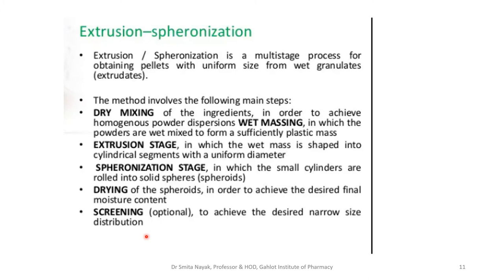Extrusion spheronization is a multi-step process of wet mass extrusion followed by spheronization to produce the pellets. There are a list of excipients used in making pellets, from API to filler to lubricant. The first step involves mixing of all the ingredients except the lubricant to achieve a homogeneous powder dispersion. The binder is added in the dry mix, and then the next step involves wet massing wherein water or a suitable solvent is added and the powders are wet-mixed to form a suitably plastic mass.